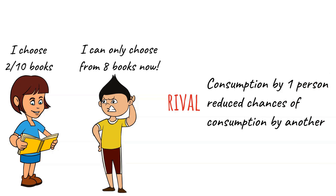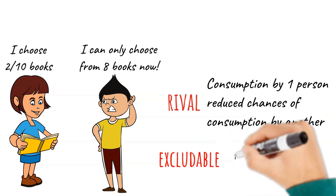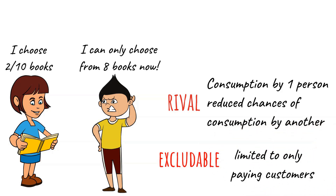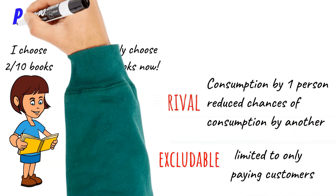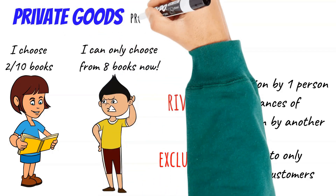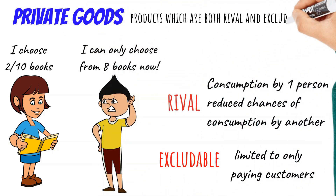Also, if a person doesn't have the money to pay for the notebook, they won't be able to enjoy it. This means that it is an excludable good. These are the characteristics of private goods — they are products which are both rival and excludable.